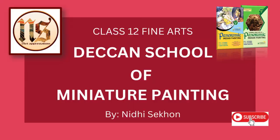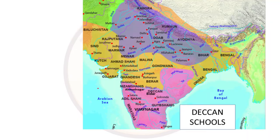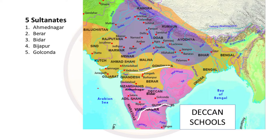Let's look at the map first so that we are able to understand the Deccan region. The region that falls between Narmada and Krishna rivers is called Deccan. This is a little highland, that's why it is also called Plateau. There were five sultanates which were part of the Deccan kingdom: Ahmednagar, Berar, Bidar, Bijapur and Golkonda.